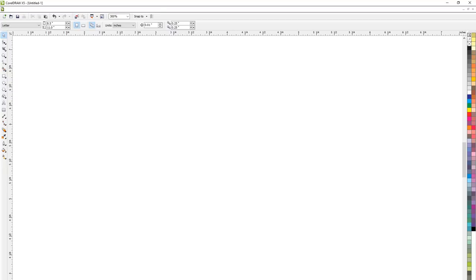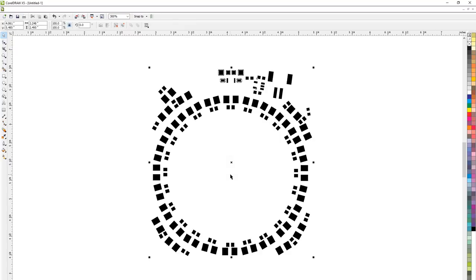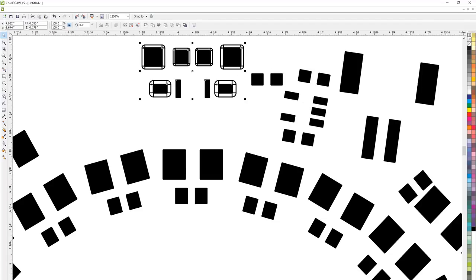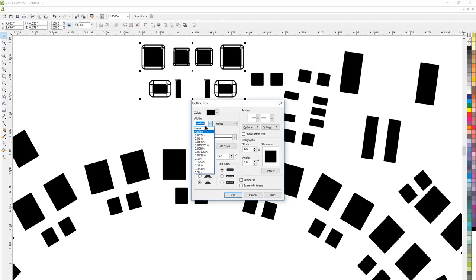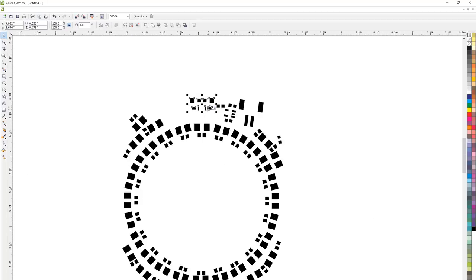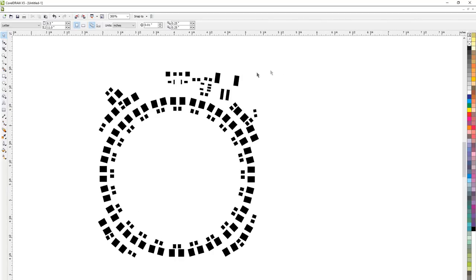And before I send this off to the laser I'm just going to import this in Corel and make some small adjustments. This SMD USB connector has some extra outlines that I need to remove so I'll set that to none. And this now looks good.